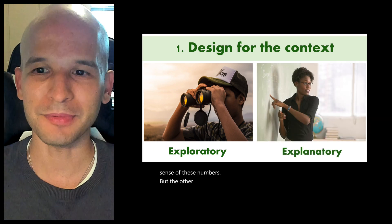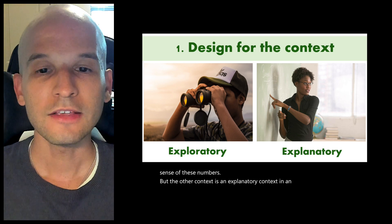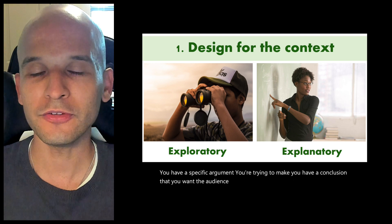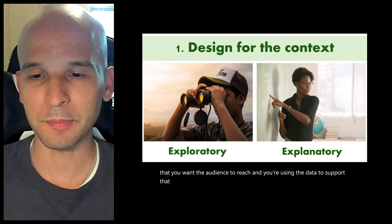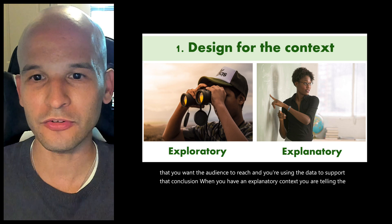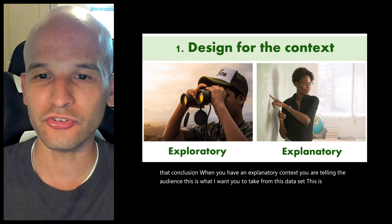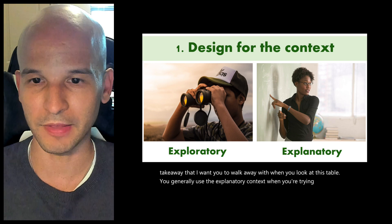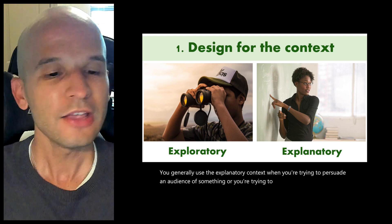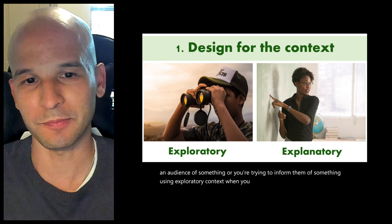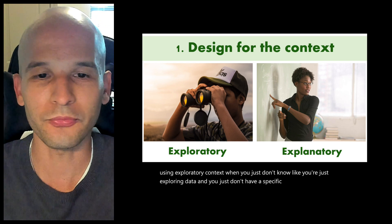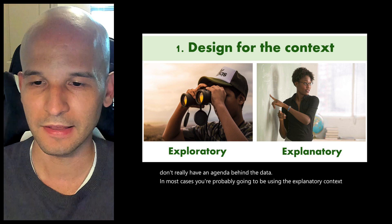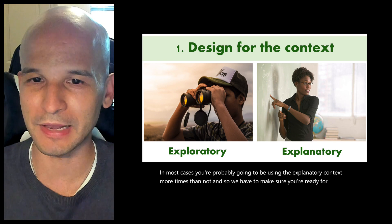The other context is an explanatory context. In an explanatory context, you have a specific argument you're trying to make — a conclusion that you want the audience to reach — and you're using the data to support that conclusion. You are telling the audience, 'This is what I want you to take from this data set. This is the takeaway I want you to walk away with.' You generally use the explanatory context when you're trying to persuade or inform an audience. In most cases, you're probably going to be using the explanatory context more times than not.